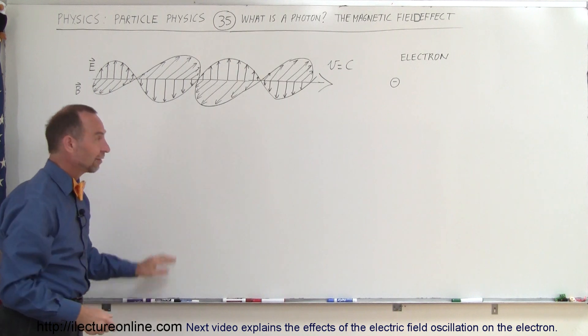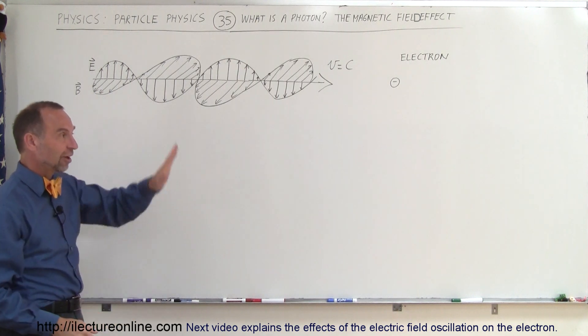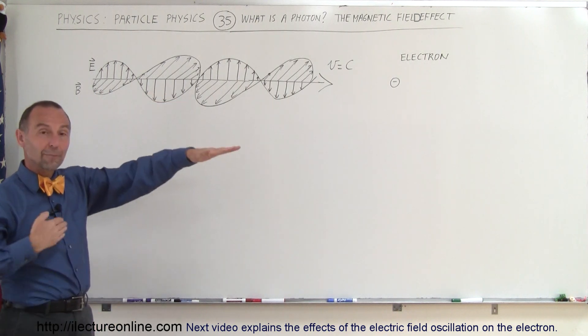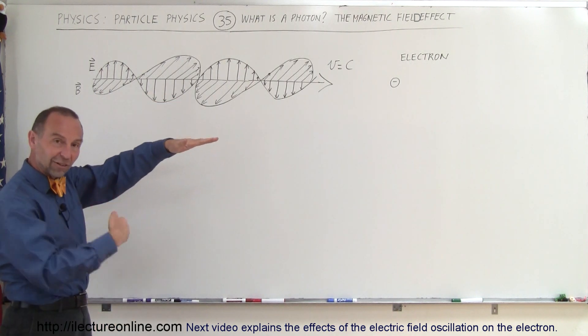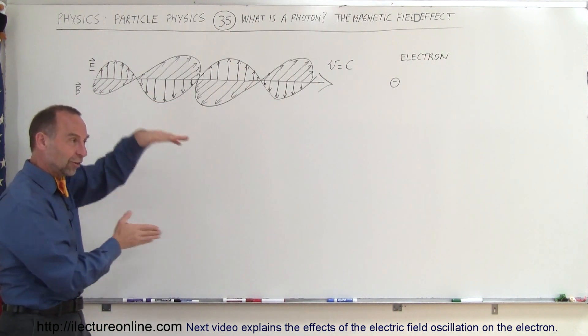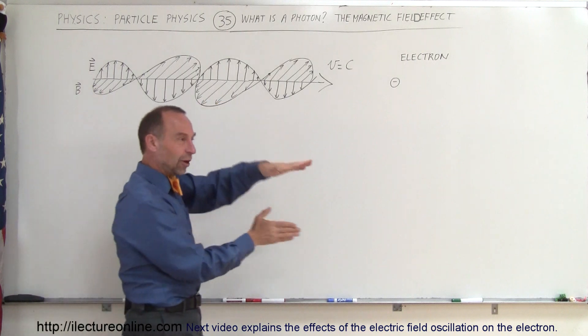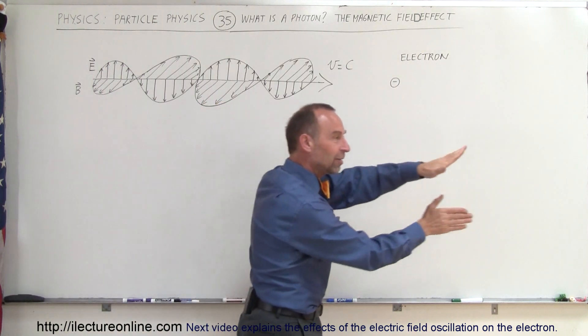So we have the electric field that is oscillating like this, and the magnetic field that's oscillating like this. That's how a photon moves through space.